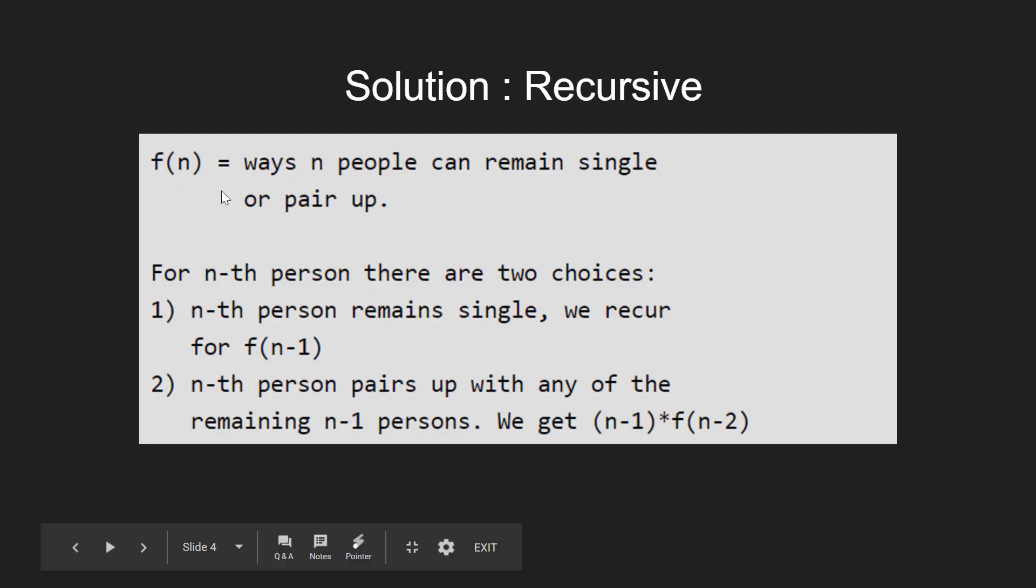Let function f(n) define the number of ways n friends can be arranged. On careful observation, we see that for every person we have 2 choices: either the person remains single or pairs up with someone.